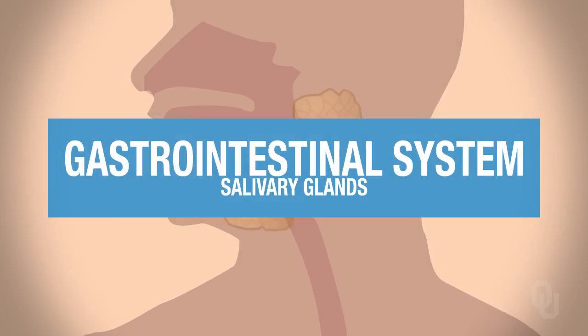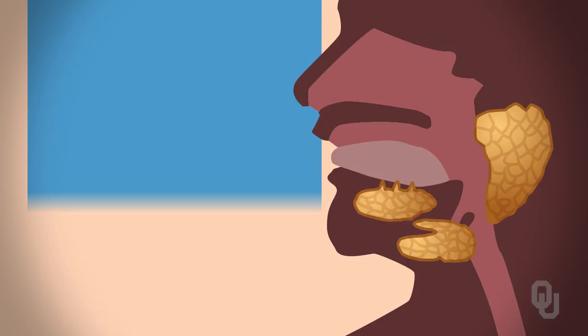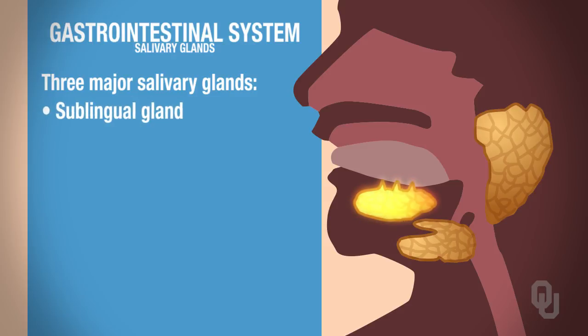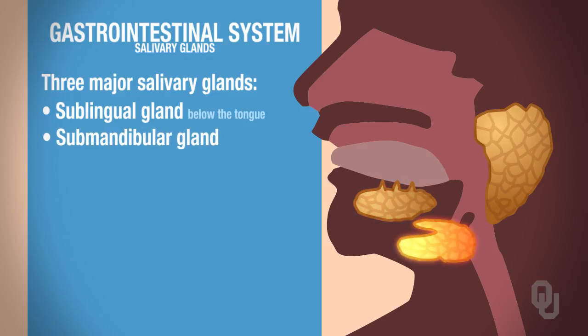We're going to start with the salivary glands. We have three major types of salivary glands. We have sublingual — if you think about what 'sub' means, sub means below — so the sublingual gland is below the tongue. Submandibular, so that would be below the mandible.